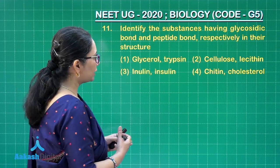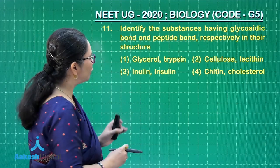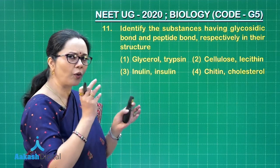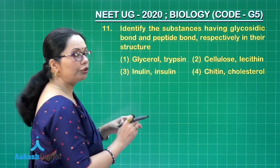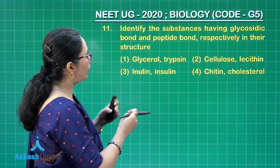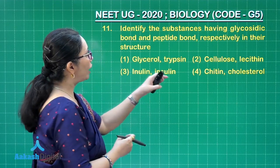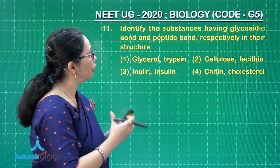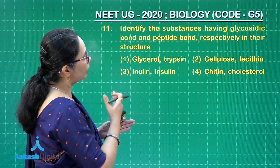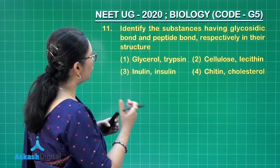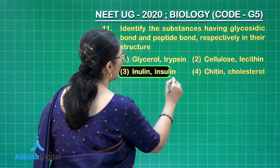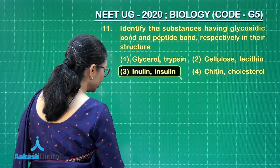Out of the choices, the tricky pair is inulin and insulin. Inulin is a fructan — a sugar — where the glycosidic bond is formed between beta-fructose units. Insulin is a protein with two polypeptide chains, the A and B chains, which contain peptide bonds between amino acids. So the correct answer is the third option.